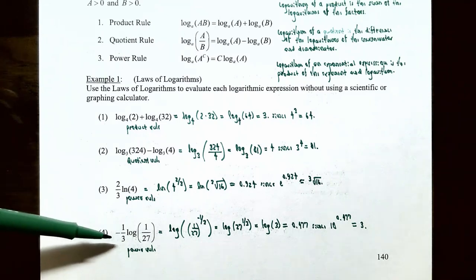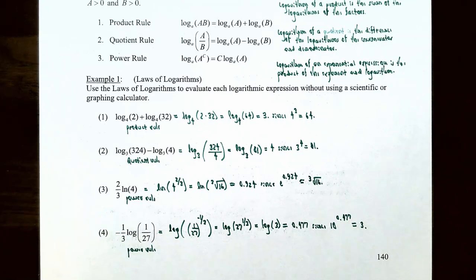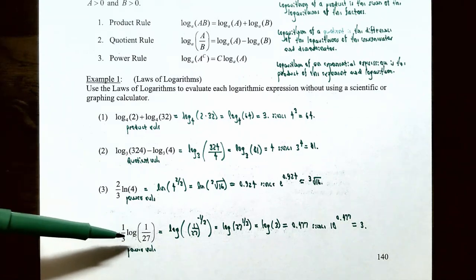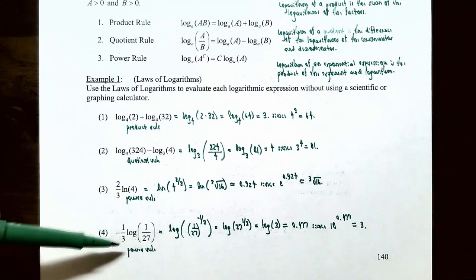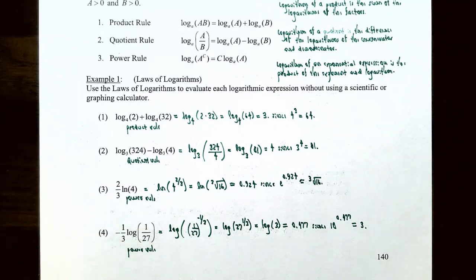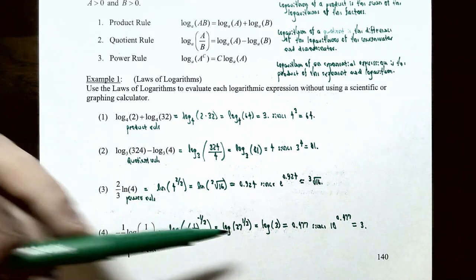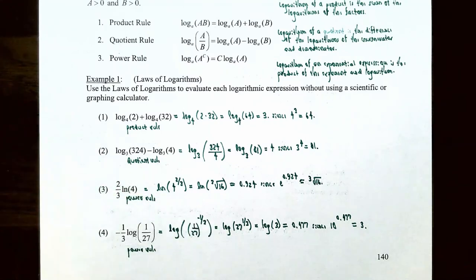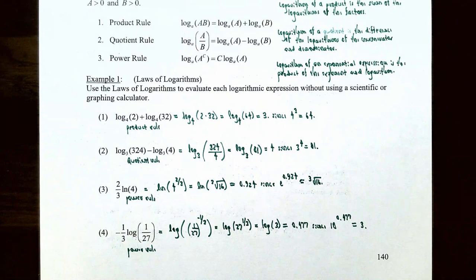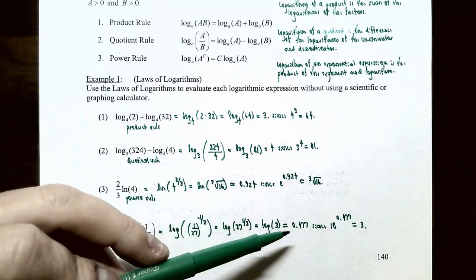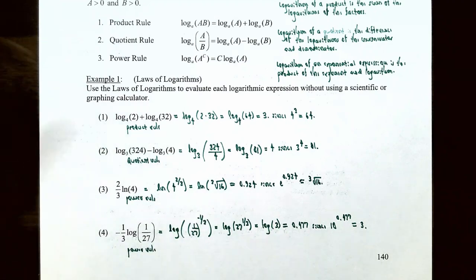Number four: negative one third times log of 1/27 — this is a common logarithm, base 10. Use the power rule to rewrite the coefficient as an exponent: log of (1/27) to the negative one-third. That equals log of 27 to the positive one-third, which is log base 10 of the cube root of 27, or log base 10 of 3. Using a calculator, log base 10 of 3 is approximately 0.477.